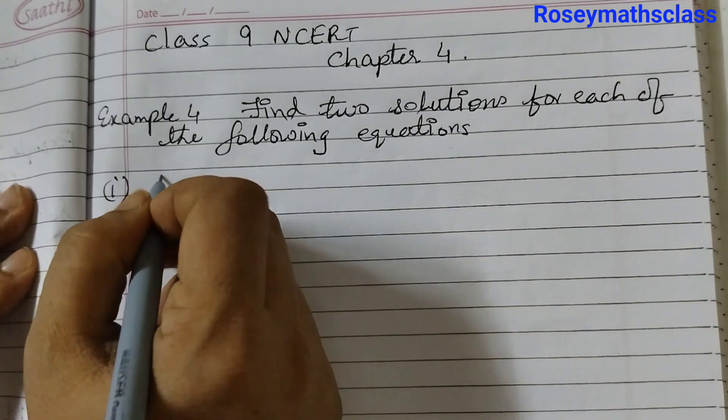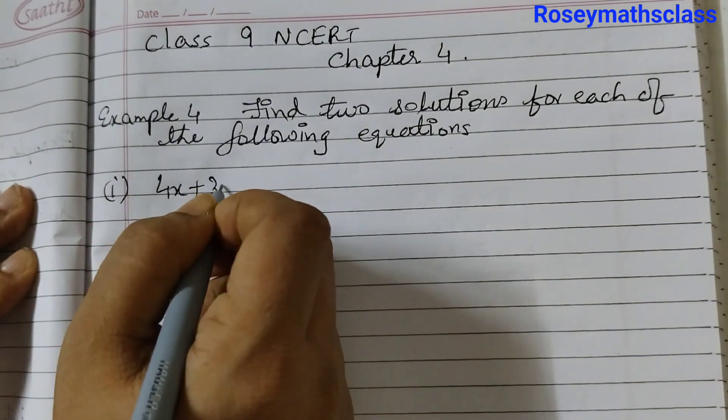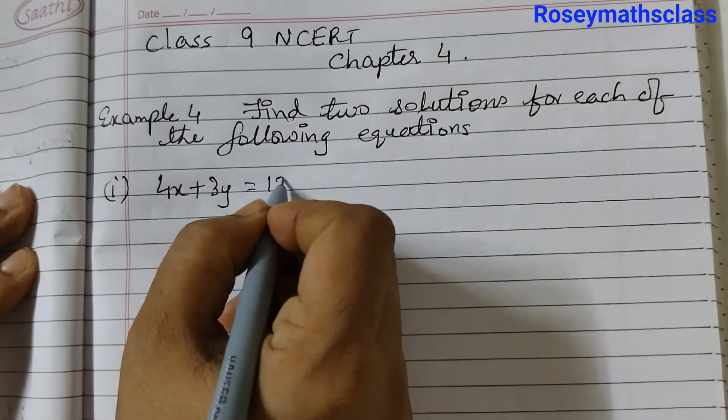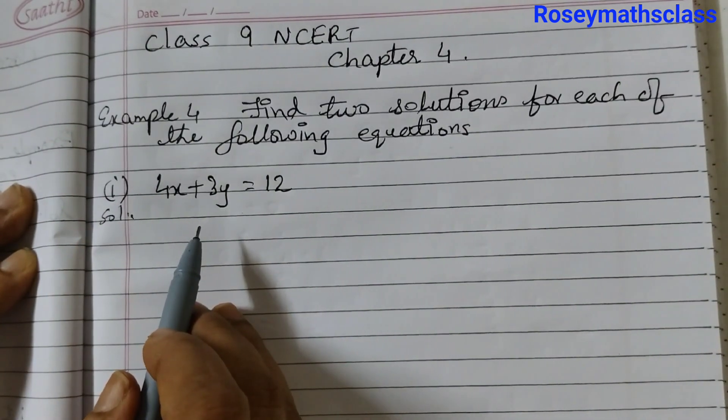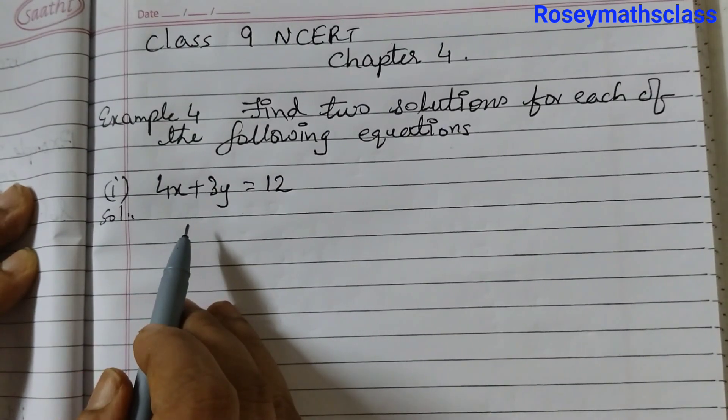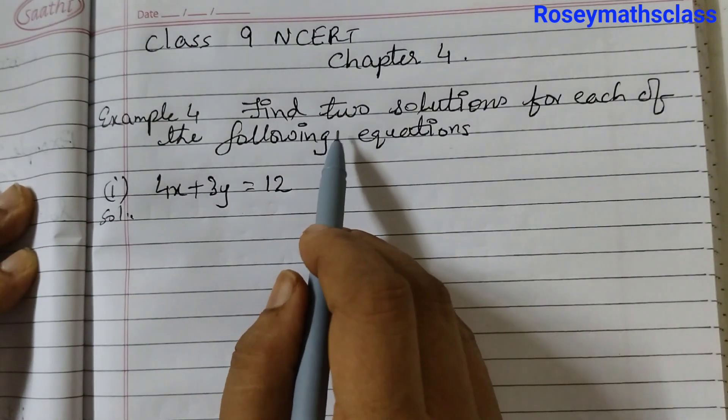The first equation is 4x plus 3y is equal to 12. This is a linear equation so we can find infinitely many solutions for this, that is any number of solutions. We just need to find out two solutions.